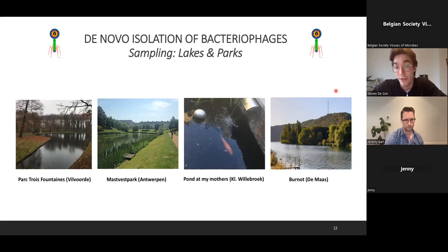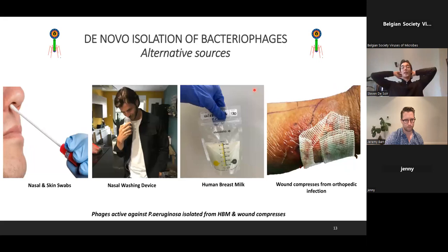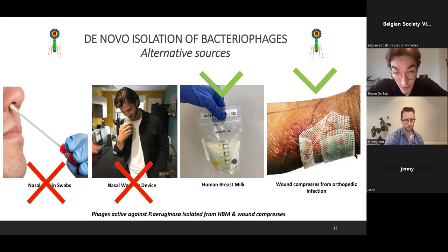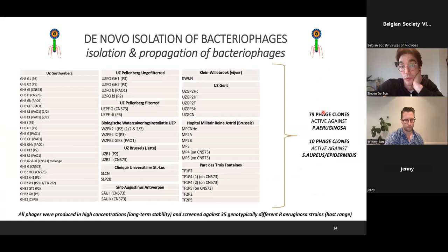Since Staphylococcus is often found in the nose of people, I managed to get my hands on some nasal and skin swabs used for MRSA testing. I also used a nasal washing device — you can see my brother-in-law here because I asked my entire family to wash their noses so I could recover the water afterwards. We also managed to sample human breast milk and wound compresses from infected patients, and interestingly, in the breast milk and wound compresses we isolated bacteriophages.